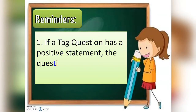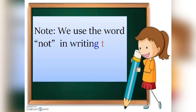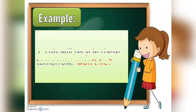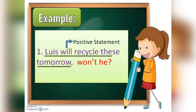Reminders: If a tag question has a positive statement, the question tag at the end is negative. If the statement in the tag question is positive, the question tag must be negative. We use the word 'not' in writing the negative statement, or a contraction is used. Example: 'Luis will recycle these tomorrow, won't he?' — 'Luis will recycle these tomorrow' is a positive statement, that's why we used a negative question tag.